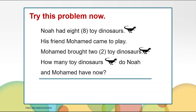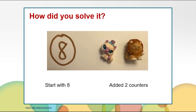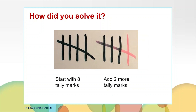Everyone had some great answers. Let's take a look at some of the ways you solved the problem. Maybe you started with 8 dots on a 10 frame for the 8 toy dinosaurs Noah had, then added 2 more dots for Muhammad's 2 toy dinosaurs — 8 and 2 more makes 10. Maybe you started with the number 8 and counted on 2 counters: 8, 9, 10, so they had 10 toy dinosaurs. Maybe you started with 8 tally marks for Noah's toy dinosaurs and added 2 more tally marks for Muhammad's to make 10.